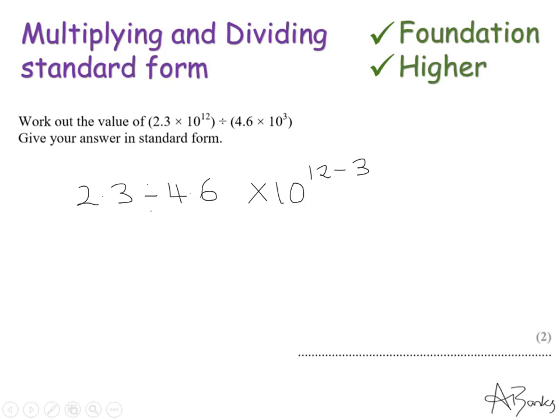So 2.3 divided by 4.6. Well because 4.6 is double of 2.3, I know this is equivalent to a half. So it's 0.5 times 10 to the power of. 12 take away 3 is just 9.